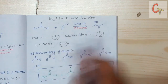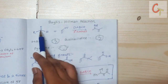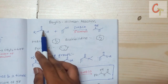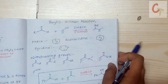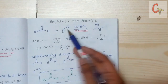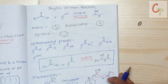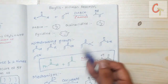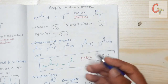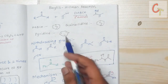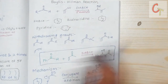Generally DABCO is used in the Baylis-Hillman reaction. There is a carbon-carbon bond formation between this carbon and this carbon. 'W' here stands for the withdrawing group. The withdrawing groups that can be used in this reaction include aldehyde, ketone, ester, tertiary amine, sulfur group, and similar groups — all of which remove electron density from the alkene carbonyl carbon, making that carbon electrophilic in nature.